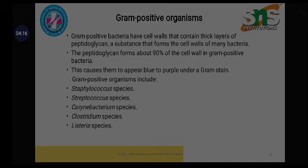Examples of gram positive organisms include Staphylococcus species, Staphylococcus aureus, Streptococcus species, Corynebacterium, Corynebacterium diphtheriae, Clostridium tetani, and Listeria monocytogenes. The peptidoglycan forms about 90 percent of the cell wall in gram positive cells.